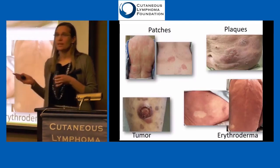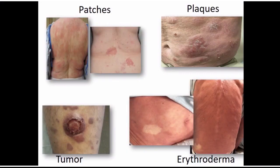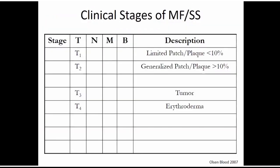The T staging is defined by what we see on the skin — just having patches, and how many patches. Is it a very limited area or a lot? Do you have plaques — raised up and scaly? Do you have a tumor? Or are you red — erythroderma? Those particular findings tell us whether you have T1, T2, T3, or T4.